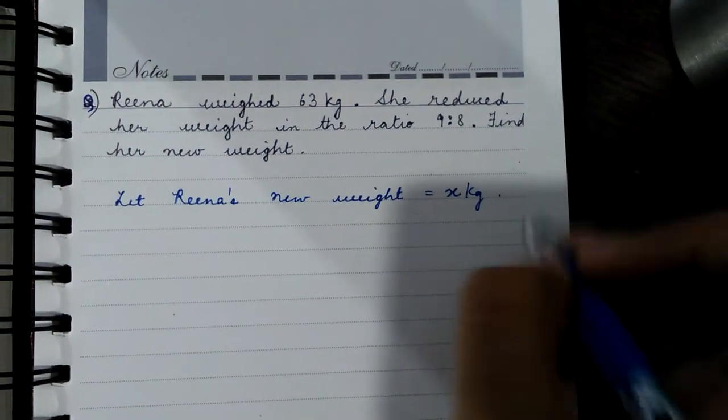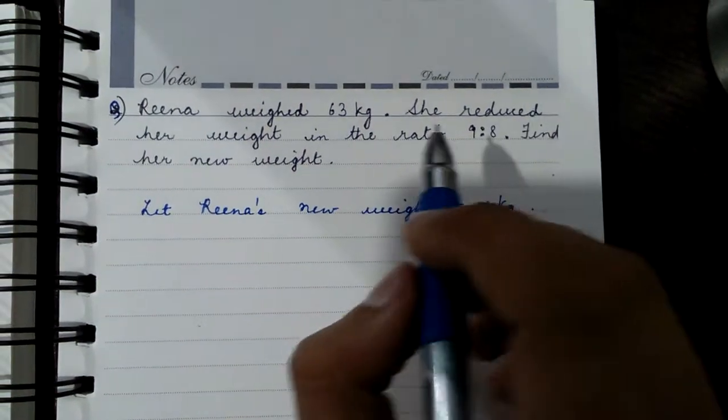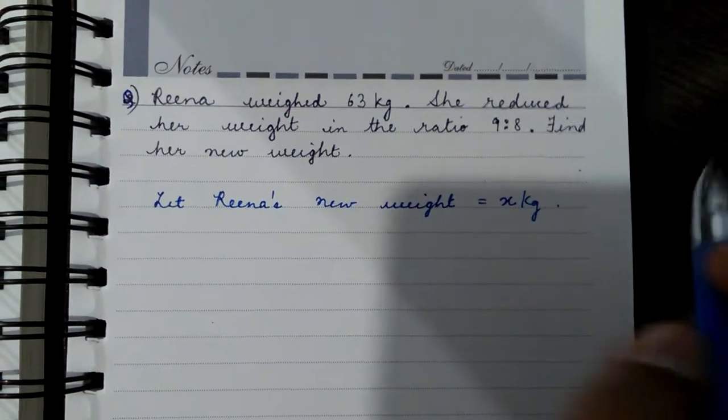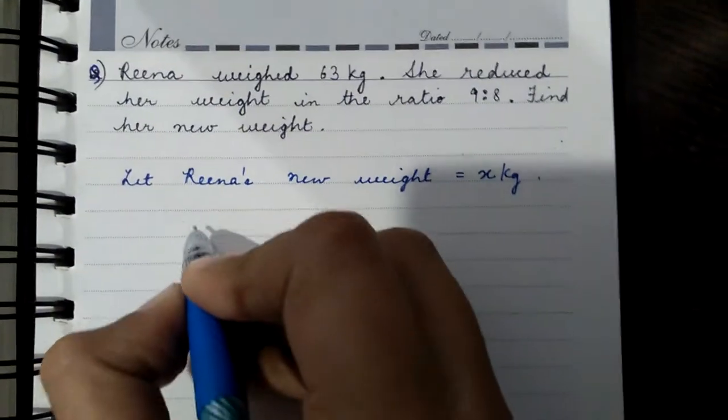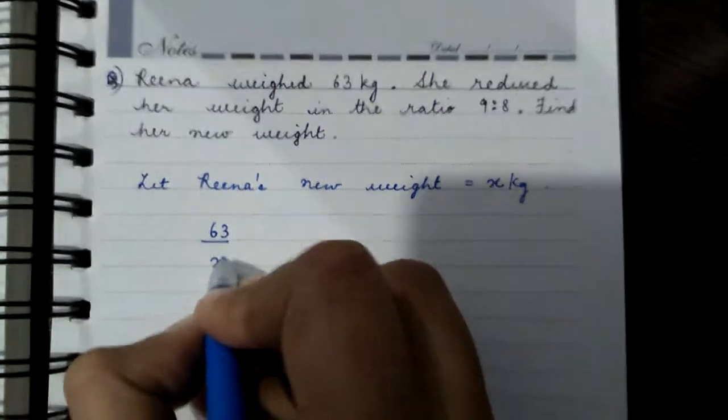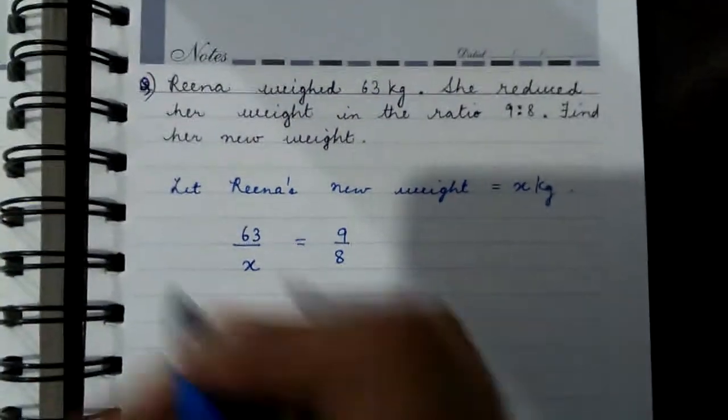So what is given? She reduced her weight in the ratio 9 is to 8. That means the ratio of her original weight to the new weight is 9 is to 8. Original weight is 63 kg, and the new weight we cast as x kg, so 63 to x equals 9 is to 8.